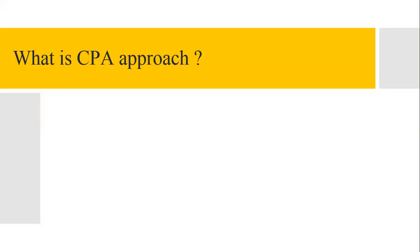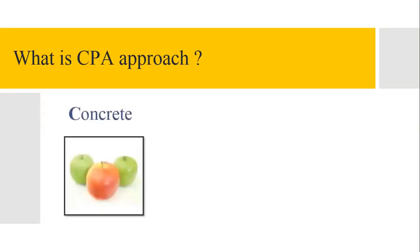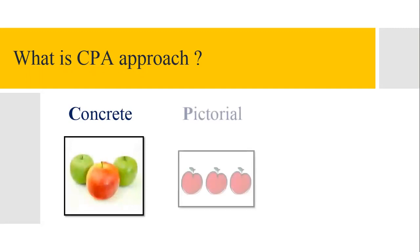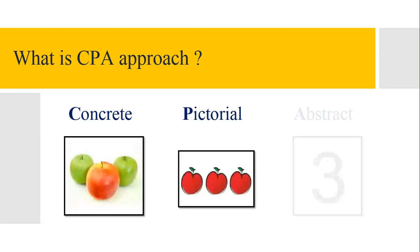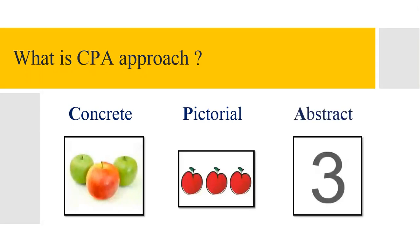The first stage, C, stands for concrete. The second stage, P, is for pictorial, and the third and final stage, A, stands for abstract. The teaching process involves moving from concrete materials to pictorial representations and finally to abstract symbols and problems. Let's deep dive into each of these stages.